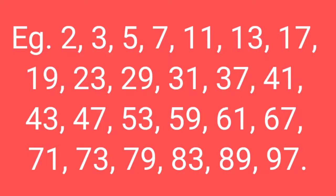Let me repeat all prime numbers from 1 to 100. There are 25 prime numbers: 2, 3, 5, 7, 11, 13, 17, 19, 23, 29, 31, 37, 41, 43, 47, 53, 59, 61, 67, 71, 73, 79, 83, 89, and 97.